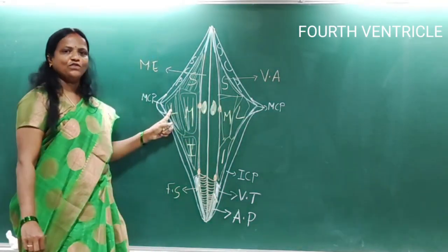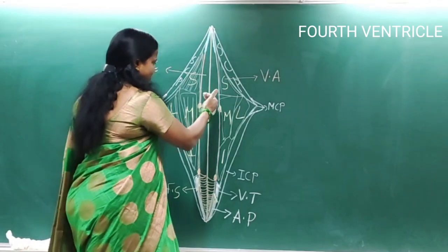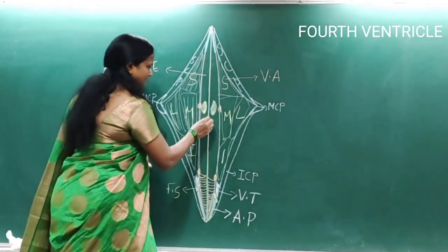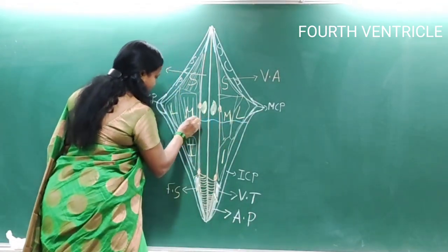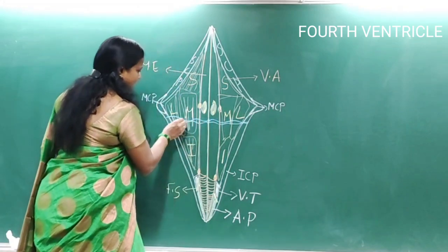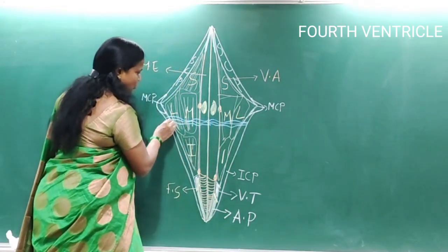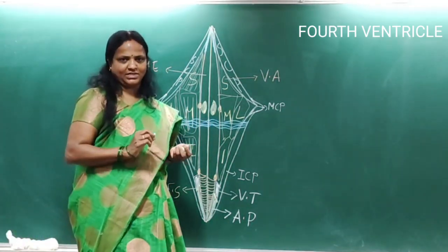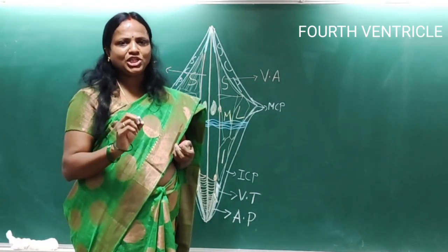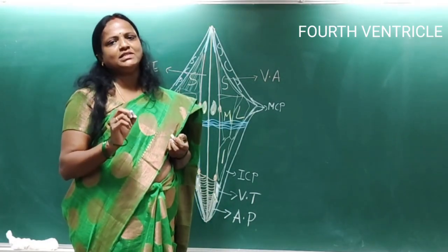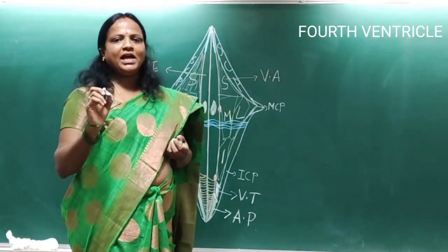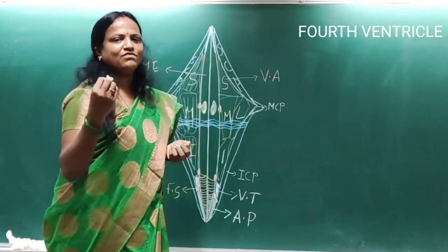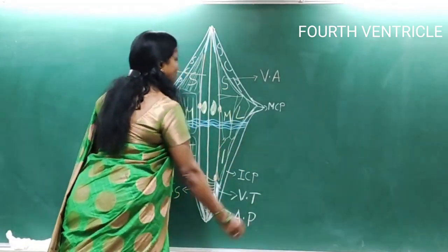Inferior to the facial colliculus, we can appreciate a series of fibers traversing across the floor of the fourth ventricle. These fibers are called striae medullaris. They emerge from the arcuate nucleus and travel towards the cerebellum, hence they are also called the arcuato-cerebellar tract.